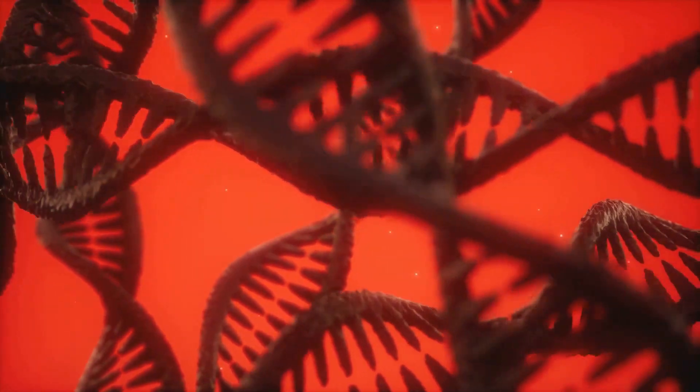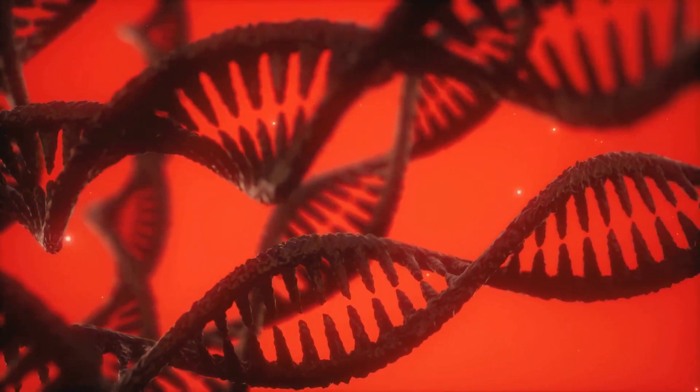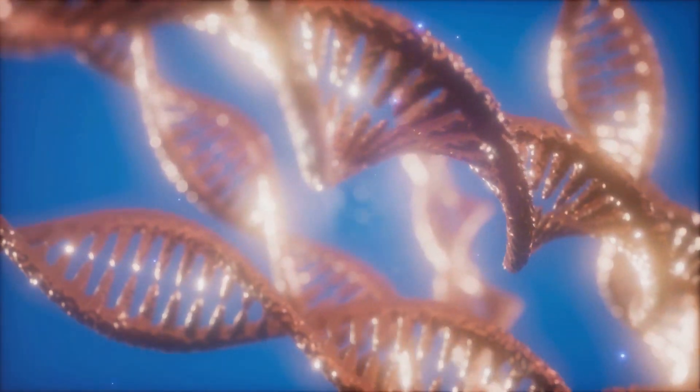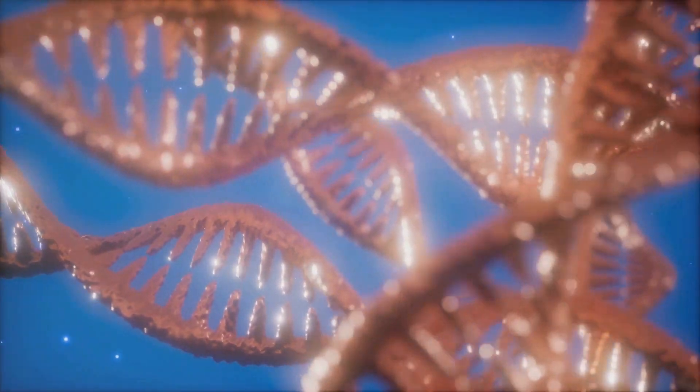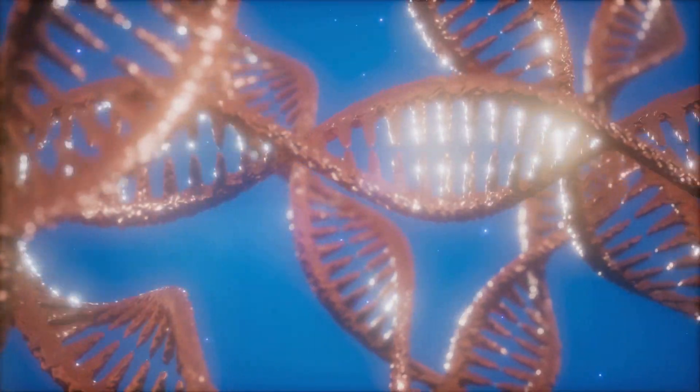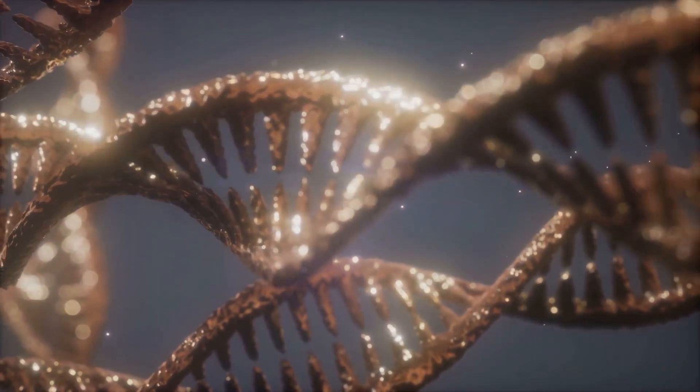Then came Francis Crick, the co-discoverer of the structure of DNA. In his 1988 book, What Mad Pursuit?, Crick further propagated this notion of DNA as a blueprint, despite the fact that DNA does not contain the control structures or the specificity to dictate the intricacies of cellular function, let alone the growth and development of an entire organism.